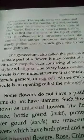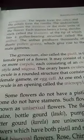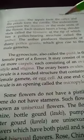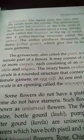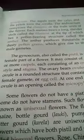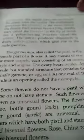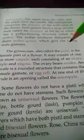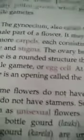The anther is the upper portion and the filament is the lower portion of the stamen. The anther produces thousands of pollen grains, which give rise to the male gamete.